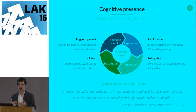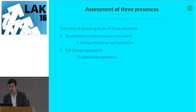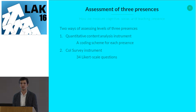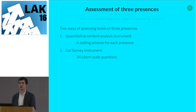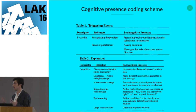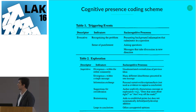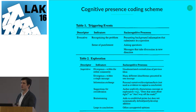Often a resolution will trigger a new learning cycle, so it's more like a spiral than a circle. Formally, cognitive presence is defined as the extent to which participants in a community of inquiry are able to construct meaning through sustained communication. Now, how do we measure these three presences? There are two ways. The oldest is through content analysis of online transcripts, and more recently a survey tool — 34 items given to students after the course.